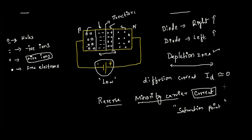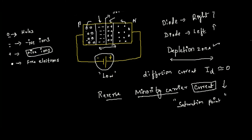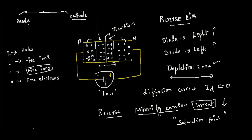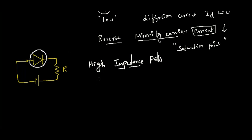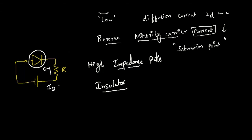The diffusion current is not created and minority carrier current is also negligible. In the circuit diagram, the PN junction diode is connected to the reverse end of the battery, creating a high impedance path — the wide depletion zone acts as this high impedance. The diode now behaves like an insulator because there is no diode current flowing. There is no drift current, no diffusion current, no reverse minority charge carrier current, so the diode current Id is equal to zero, because of the large depletion zone created.